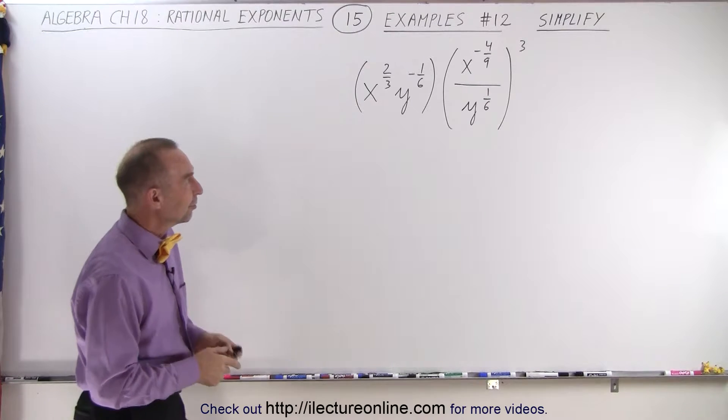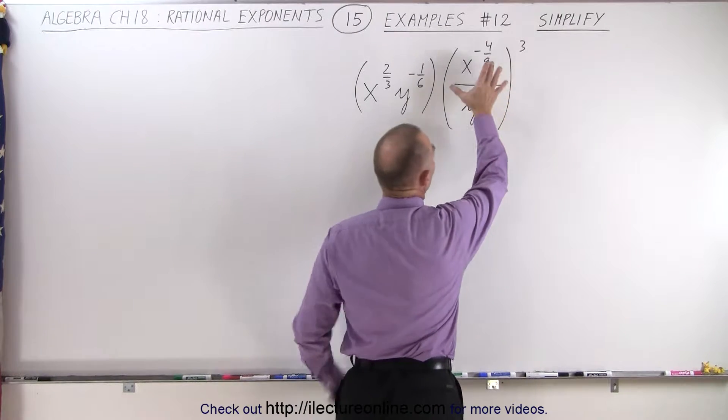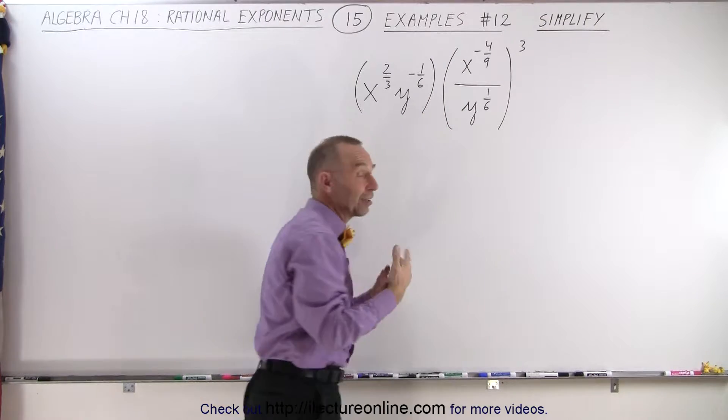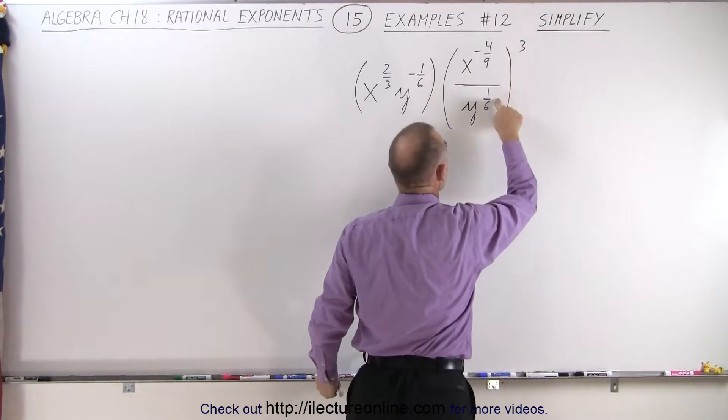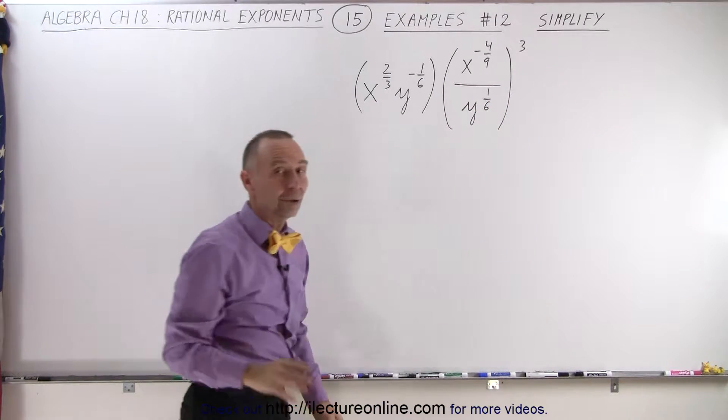rational exponents. All right, how do we start? Well, first of all, we have this in parentheses raised to the third power, so we have an exponent raised to exponent. It applies to both the numerator and the denominator, and we have to multiply those exponents.